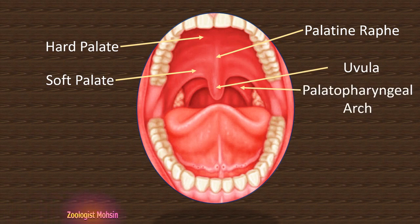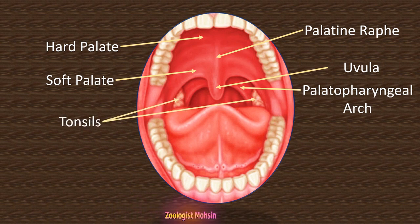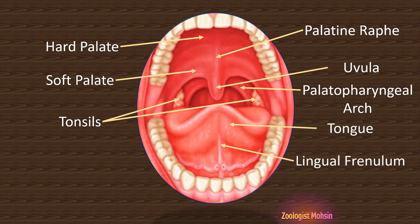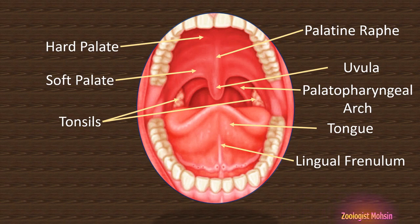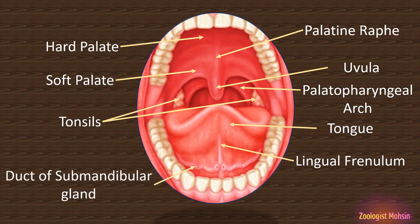Similarly, behind the uvula, the palatopharyngeal arch is present, and when you speak while opening your mouth, this palatopharyngeal arch is visible. Along the lateral sides of the uvula, there are two tonsils — these are also called palatine tonsils. There is also the tongue, and on the underside of the tongue there is a line connecting it to the base of the mouth called the lingual frenulum. Lastly, the duct of the submandibular gland secretes saliva inside the mouth.